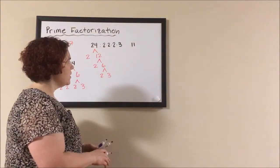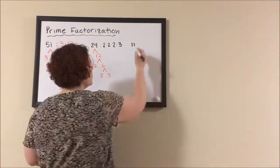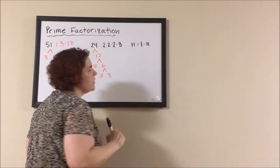For 11, the only numbers that go into 11 are 1 and itself. It is prime. So we just say this is 1 times 11 and leave it at that.